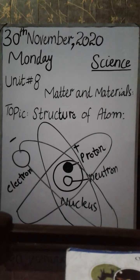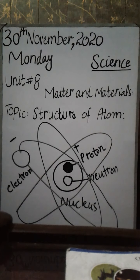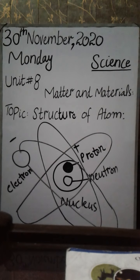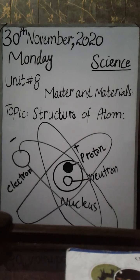So this is what I have made on the board — this is the diagram of the atom. In the diagram we can see that the central part is the nucleus, which controls all the activity of the cell. The nucleus contains two further small particles: one is proton and the other is neutron. Proton has a positive charge, neutron has no charge, and the electron is moving around outside the nucleus. This is the structure of the atom.